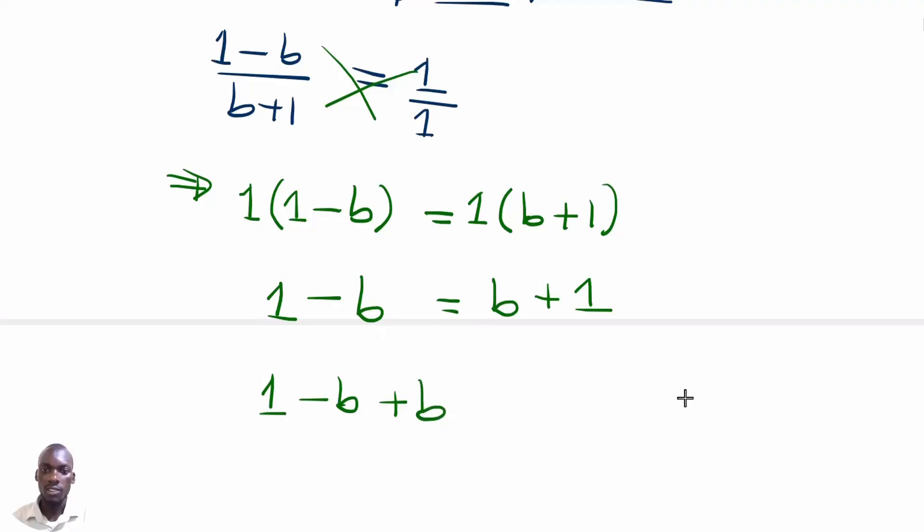So we can see that this b and this will cancel out. So our next step, we have 1 on the left hand side being equal to b plus b, giving us 2b, then plus this remaining 1.